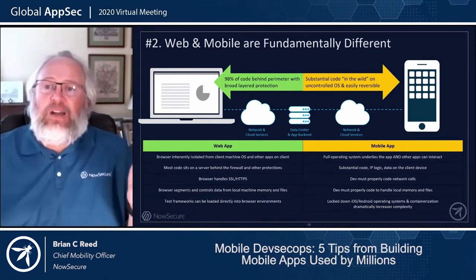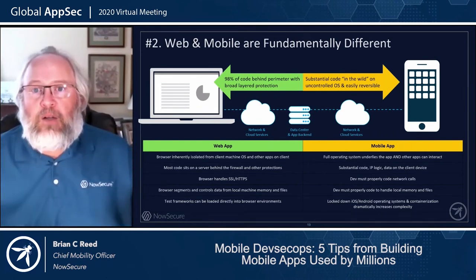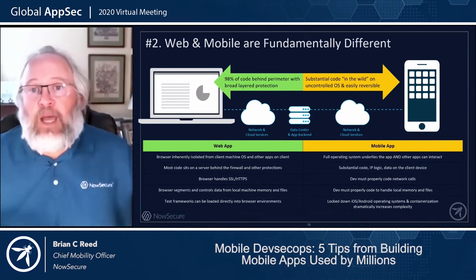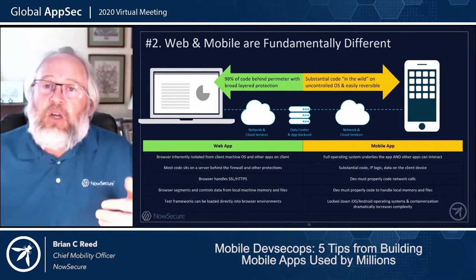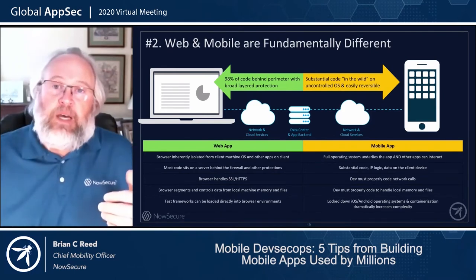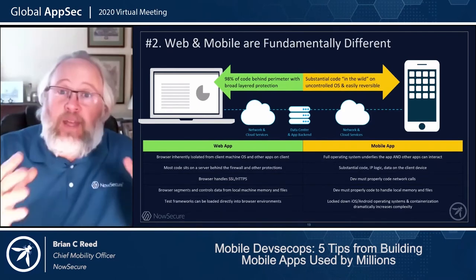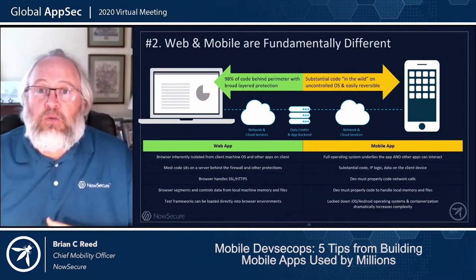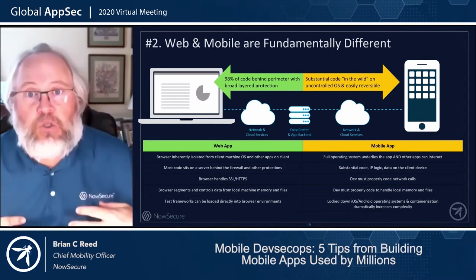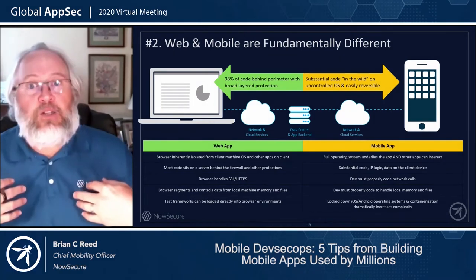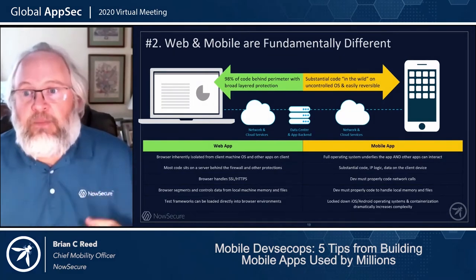With mobile, it's the complete opposite. Almost all the mobile code lives in the wild — a lot of mobile apps we see have 50 to 60% of the code on the device, with the rest behind the firewall behind some APIs. That code on the mobile device is easily reversible. You can reverse any application — the tools are there. We have open source tools like Frida and Radare2 that you can use to reverse an iOS app, even if it's been DRM'd.